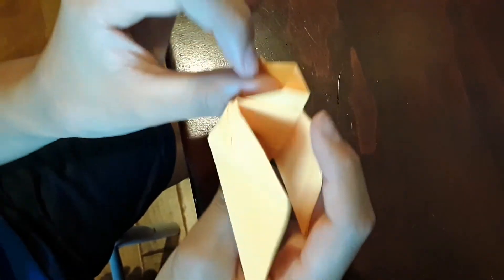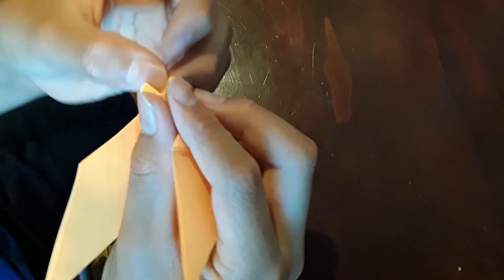And then find the beak. You can pull up to choose the right amount of space that you want. And there you go, your own origami bird.